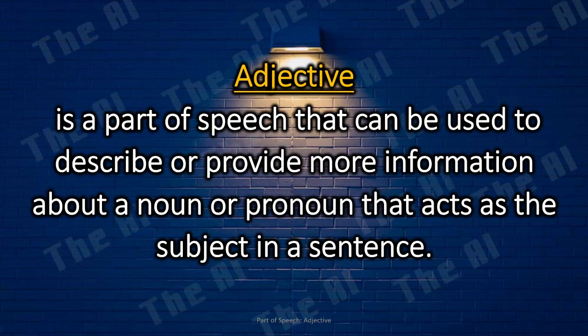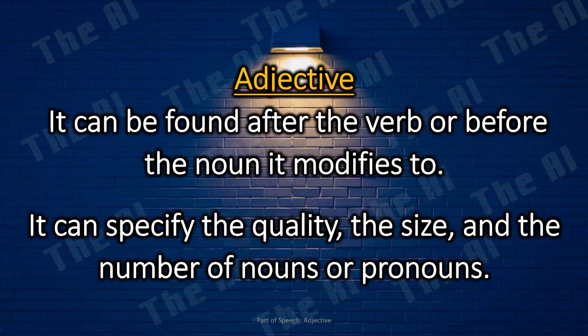Adjective. An adjective is a part of speech that can be used to describe or provide more information about a noun or pronoun that acts as the subject in a sentence. Adjectives can be found after the verb or before the noun it modifies to. It can specify the quality, the size, and the number of nouns or pronouns.